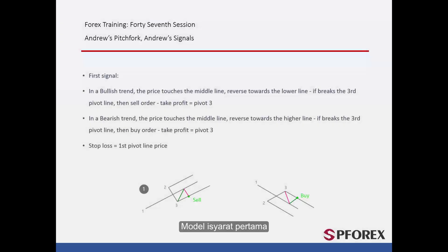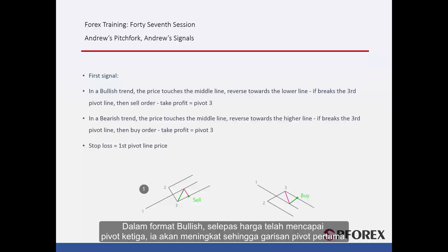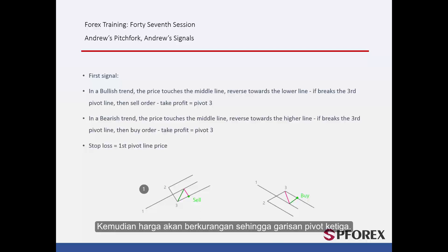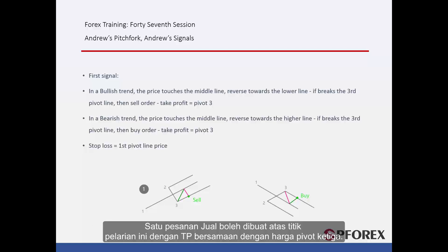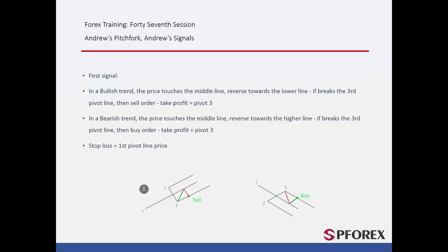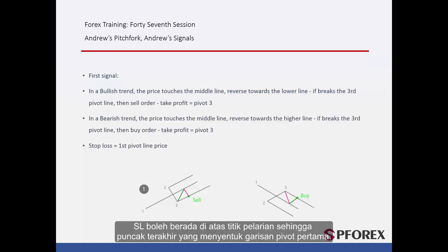First signal model. In a bullish format, after a price has reached the third pivot, it will increase until the first pivot line. Then the price will decrease until the third pivot line. A sell order can be placed on this breakout point with TP equal to the third pivot price. SL can be above a breakout point until the last peak that touched the first pivot line.